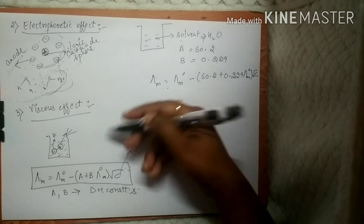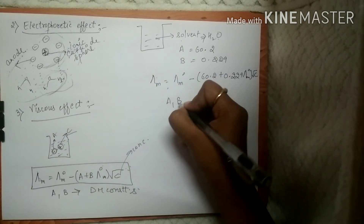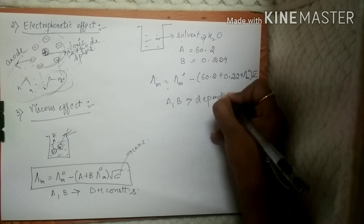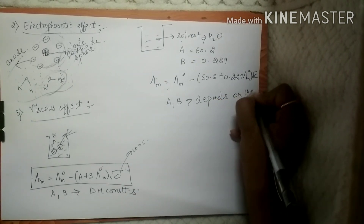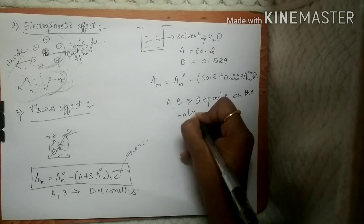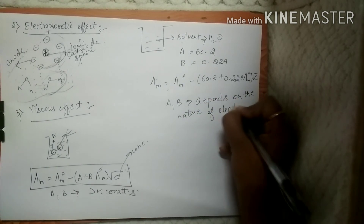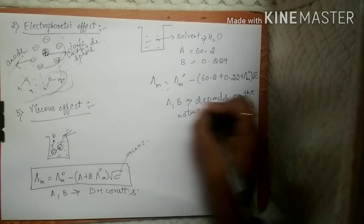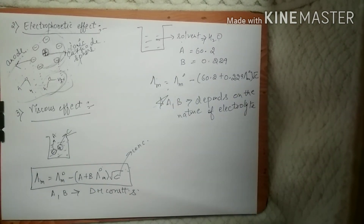The constants a and b depend on the nature of the electrolyte. This is also very important and can be asked in exams.